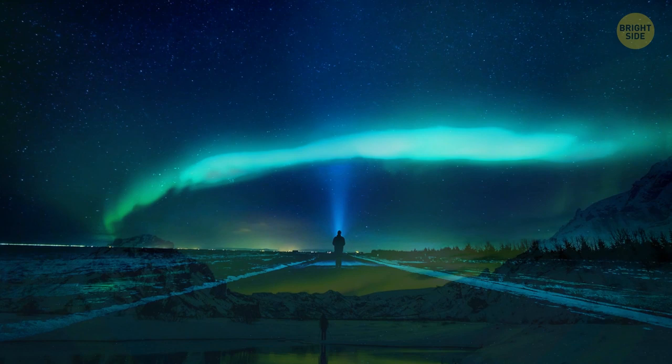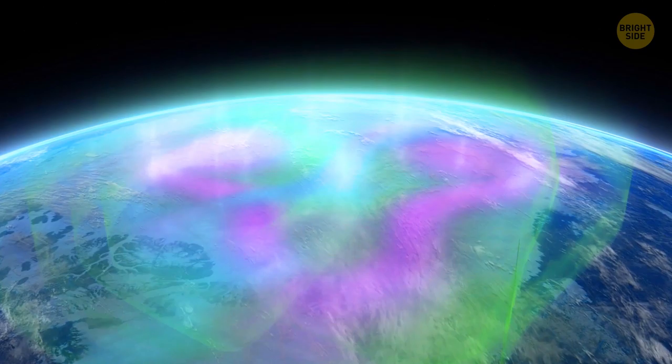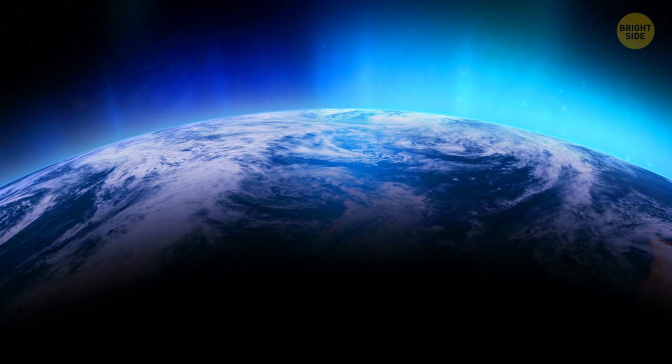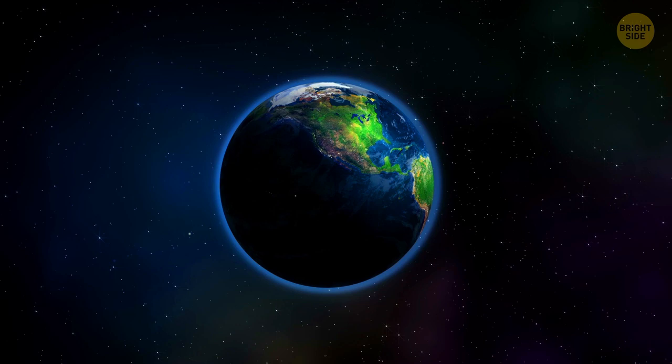On top of that, without Earth's magnetic field, you might never again see aurora borealises, or as they're called, northern and southern lights. The upper atmosphere of our planet would be exposed to powerful solar winds, and the breathtaking phenomenon wouldn't be as bright as it is now. But those wouldn't be the worst consequences of the disappearance of Earth's magnetic field. The truth is that without it, we might not survive at all.